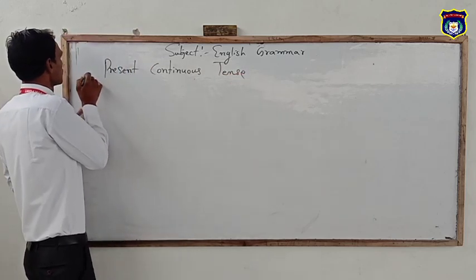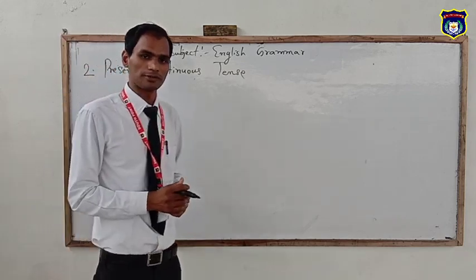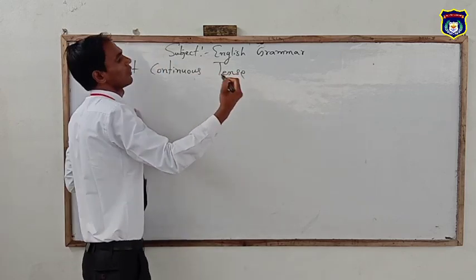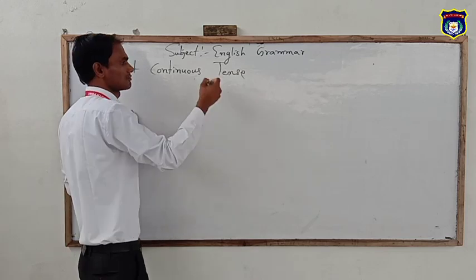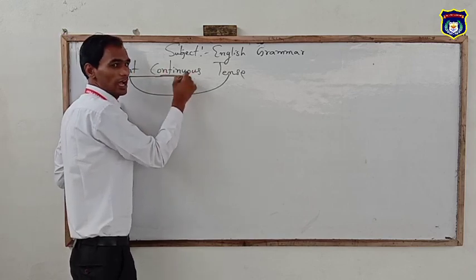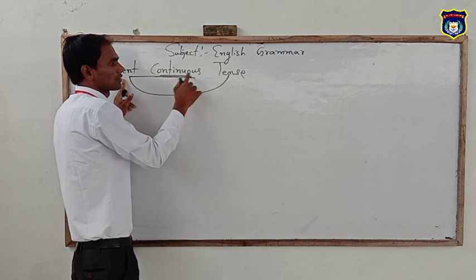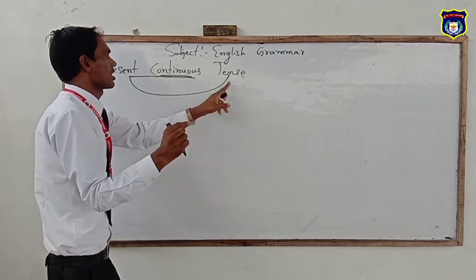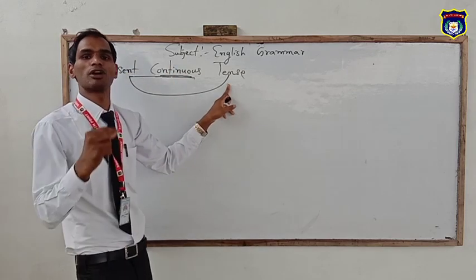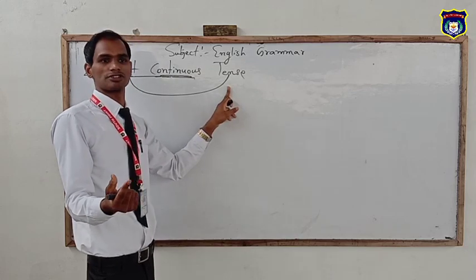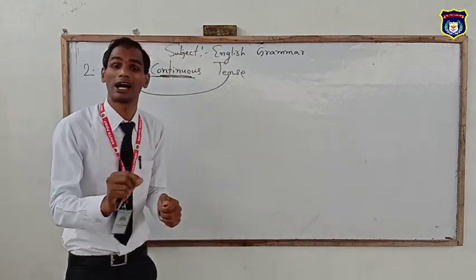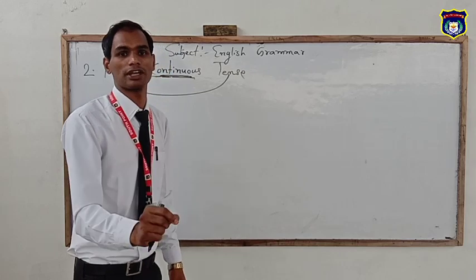We come to know what is present continuous tense. Simply, a verb is the word that represents an action or a state. An action which is happening at the time of speaking is called present continuous tense. The action which is continuing at the time of speaking in present is called present continuous tense. Present continuous tense does not represent the completed action — it represents what is running at the present moment.